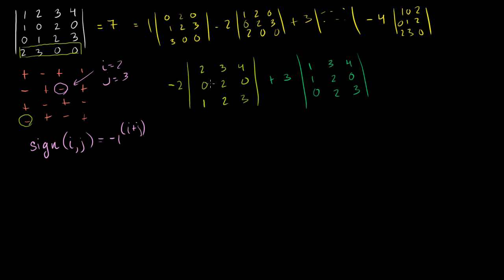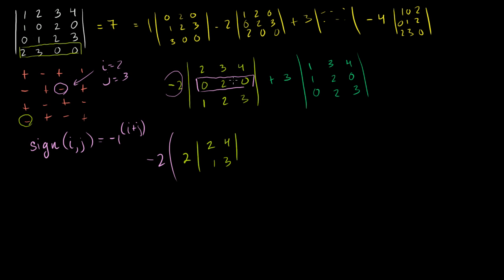We've already simplified the determinant quite a bit. Let's evaluate each piece and check that we get 7. For the first 3 by 3 determinant, we can expand along a row that looks especially simple — the one with two zeros. That gives minus 0 times something (ignore it), plus 2 times the determinant of 2, 4; 1, 3, and then minus 0 times something (ignore it). So the first 3 by 3 reduces to 2 times the 2 by 2 determinant of 2, 4; 1, 3.